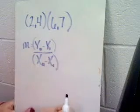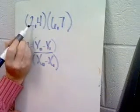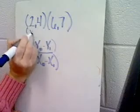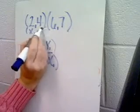I know that in an ordered pair, such as 2 comma 4, that the x coordinate always comes first and then the y coordinate.